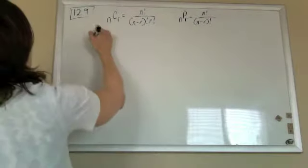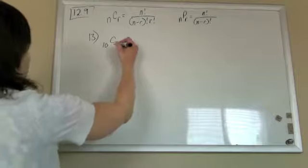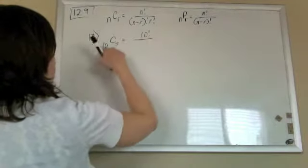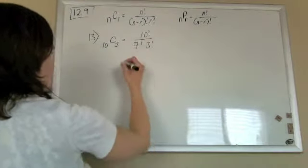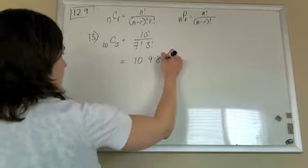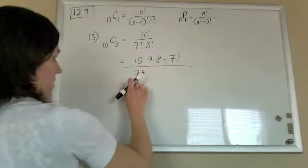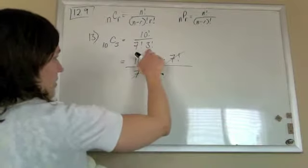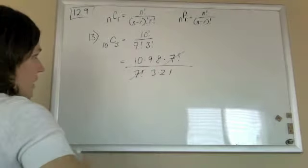And for 13, same thing. We're doing 10C3. So using this formula, it's 10 factorial, 10 minus 3 is 7 factorial times an extra 3 factorial. And when I go to work this out, 10 factorial is 10 times 9 times 8. I'm going to stop it at the 7 factorial, so that it'll cancel out with the 7 factorial on the bottom. But I still have this 3 factorial, 3 times 2 times 1.